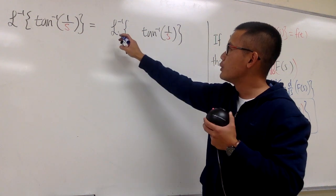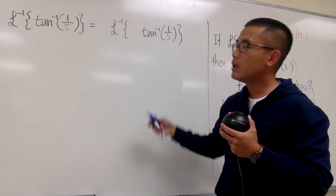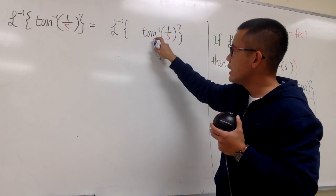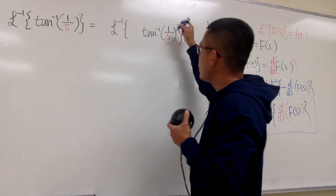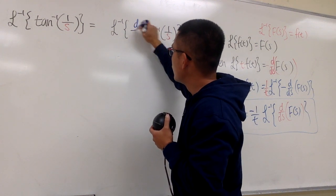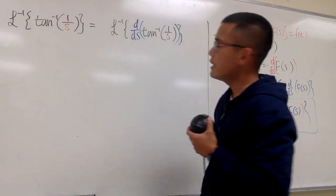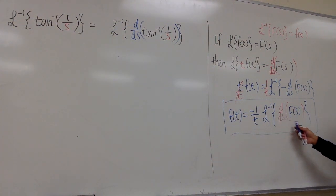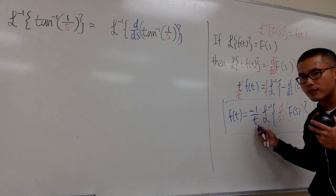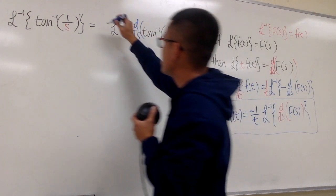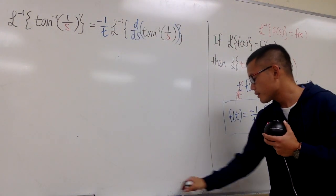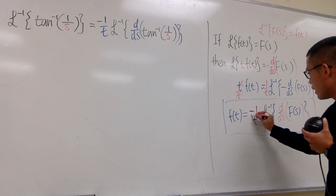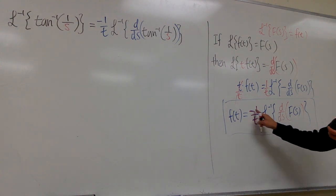I don't know how to do the inverse Laplace of inverse tangent too well, but if I differentiate the inverse tangent I will get a rational function — 1 over 1 plus whatever. So I will go ahead and differentiate this with respect to s. When I differentiate the inside with respect to s, I must put negative 1 over t in the front.